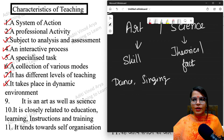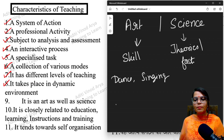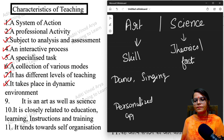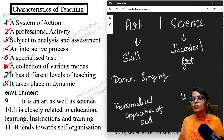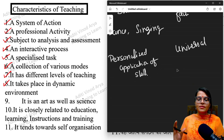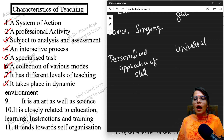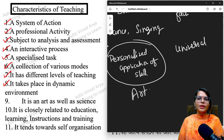Going deeper: art has a personalized application of knowledge or a particular skill, whereas science is something universal. This is the main difference — art is related to personalized application of a particular skill. For example, the same song can be sung by different singers, but you can differentiate them by voice and tone.